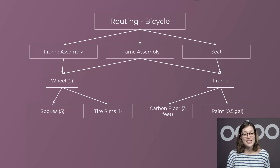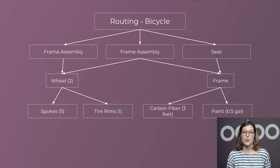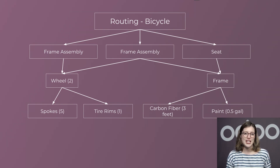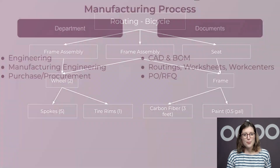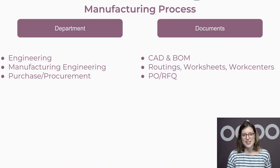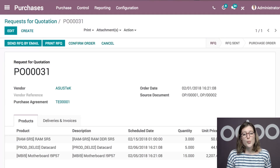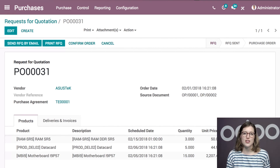Once everything is decided, we'll need to start buying the items required in our manufacturing process. So we'll go to another team: Purchase, also known as procurement. They'll disperse requests for quotations or purchase orders. Once the items arrive at our plant, they'll be received by the inventory team.